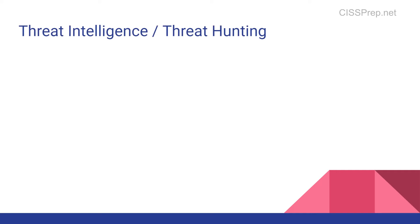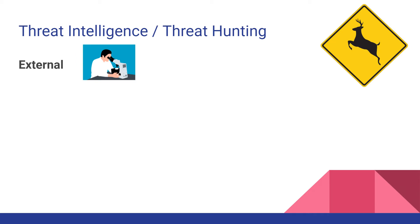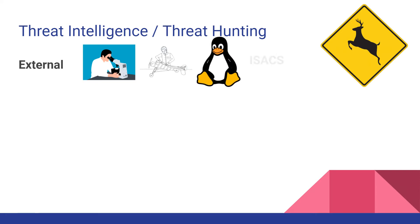Moving on to threat intelligence or threat hunting — this is the process of how you identify future threats. External threat intelligence can include activities and sources of knowledge such as open source research, threat modeling, and threat intel from third parties like vendors, governmental entities, or information sharing and analysis centers, or ISACs. Internal threat intelligence uses internal sources and groups using logs, incident reporting, and the results of forensics investigations.